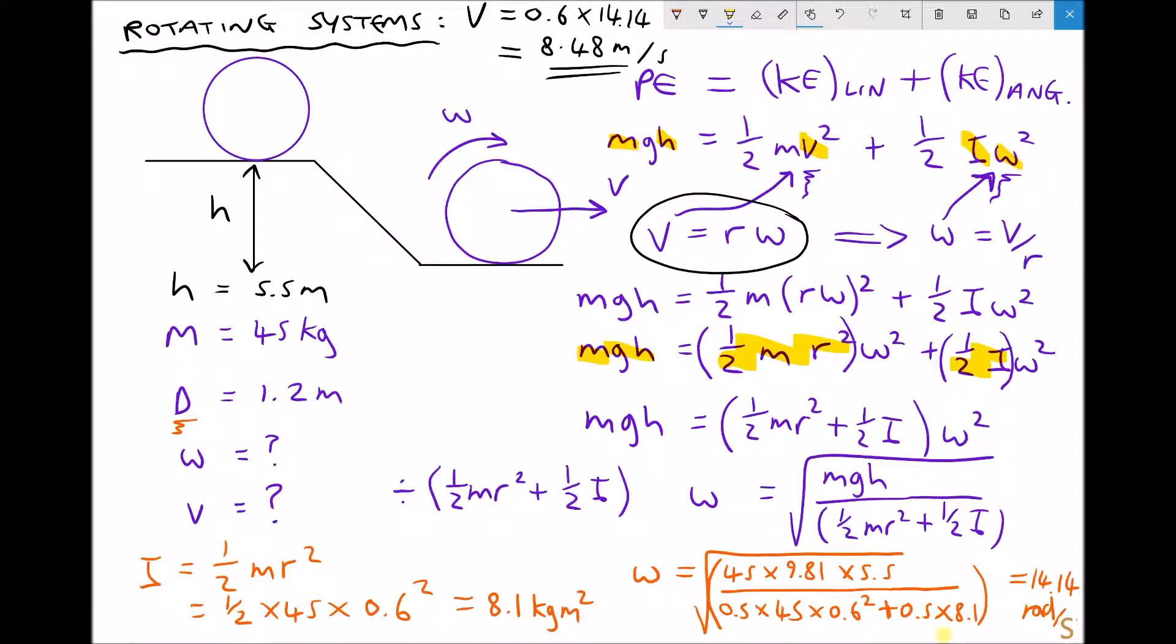So now we have both the angular velocity of 14.14 rads per second and the linear velocity of 8.48 meters per second. In the next video we'll look at another example very similar to this where potential energy is being converted to both linear and angular kinetic energy.